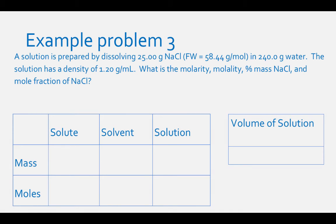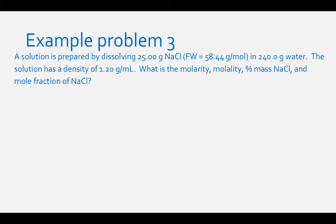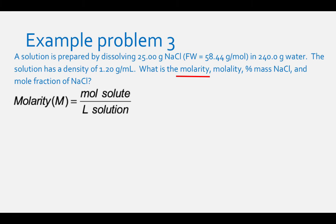A third example: a solution is prepared by dissolving 25.00 grams of NaCl (formula weight 58.44 g/mol) in 240.0 grams of water. The solution has a density of 1.20 g/mL. Find the molarity, molality, percent mass of NaCl, and mole fraction of NaCl. Fill in the table with what you know. To find moles of solute, divide 25.00 g by 58.44 g/mol, which equals 0.427 moles of NaCl.